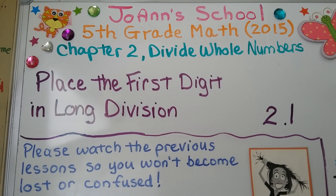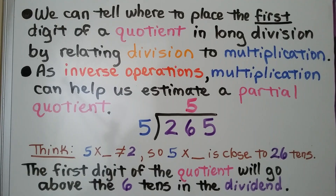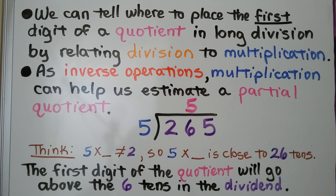We're now in chapter 2 about dividing whole numbers. This is lesson 2.1. We're going to place the first digit in the long division quotient. We can tell where to place the first digit of a quotient in long division by relating division to multiplication. As inverse operations, multiplication can help us estimate a partial quotient.